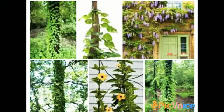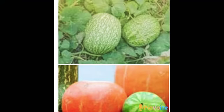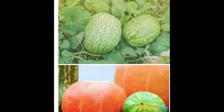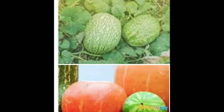Examples of climbers are money plant, grapevine, and bitter gourd plant. Plants with weak stems which creep along the ground are called creepers. For example, watermelon, pumpkin, etc. These plants also have special stems, leaves, or roots.